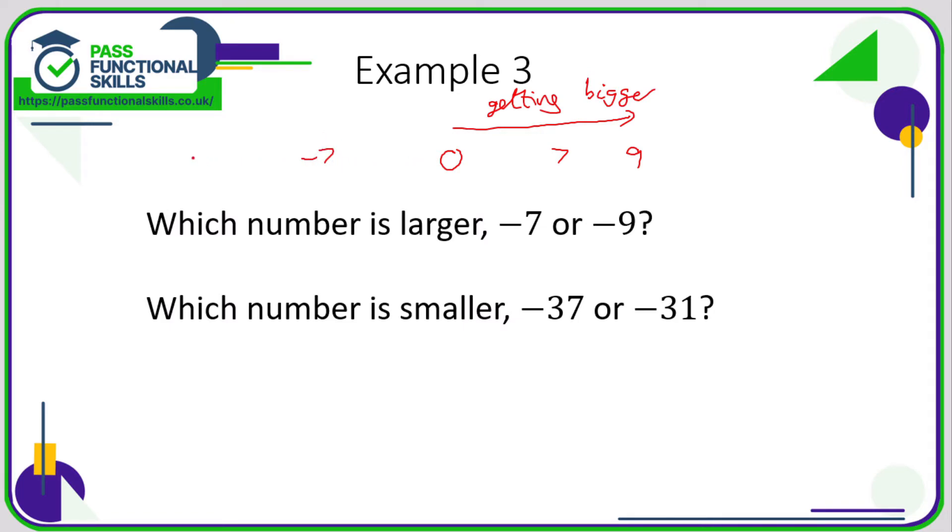And if we go to the left, we are going to be getting smaller. So it's -7 we're going to encounter first, and then -9. Writing it as positive numbers first can be quite helpful because it's just a mirror image. So we know we're getting smaller as we're going to the left there. So we want the larger number, so that's the one that is more to the right. So the larger of the two is -7.